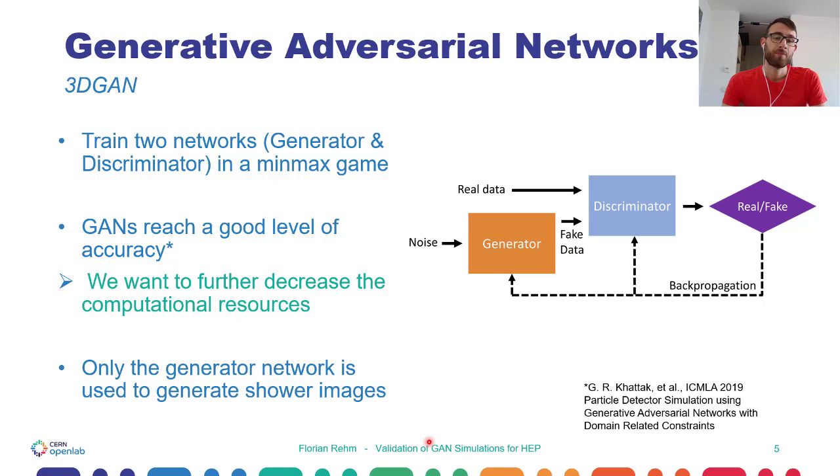In previous works, it's already shown that GANs reach a good level of accuracy. In this research, we created a new neural network architecture which speeds up inference. And we want to validate the GAN results with respect to Monte Carlo to see if the models are good enough to replace the recent Monte Carlo simulations.